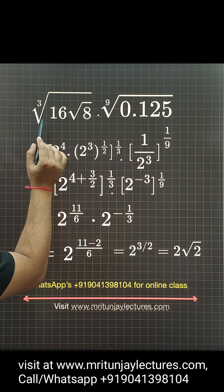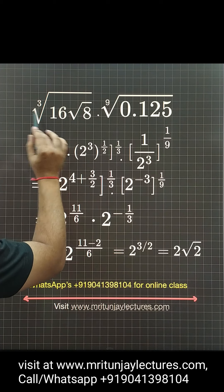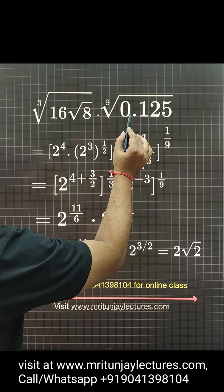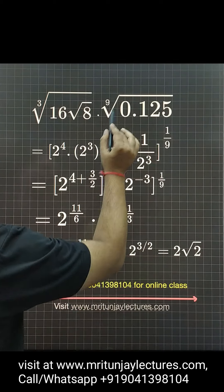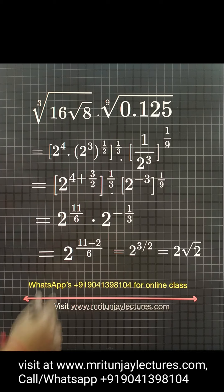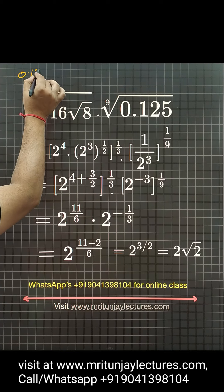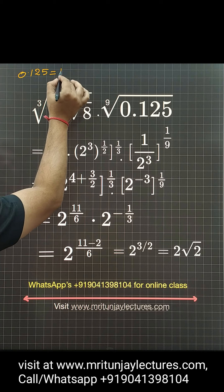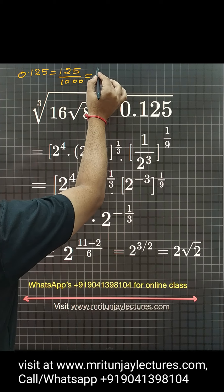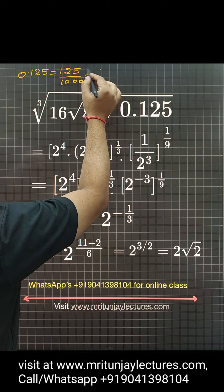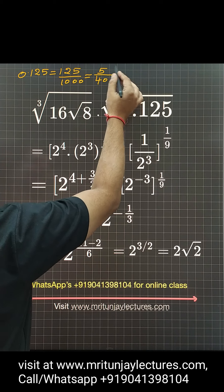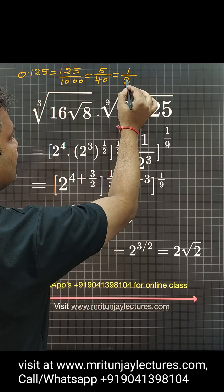Question of the day: 16 into root 8, to whole power 1 by 3, into 0.125 to whole power 1 by 9 — what is that value? Simply look here: 0.125 is written as 125 divided by 1000, which is 125 divided by 1000.